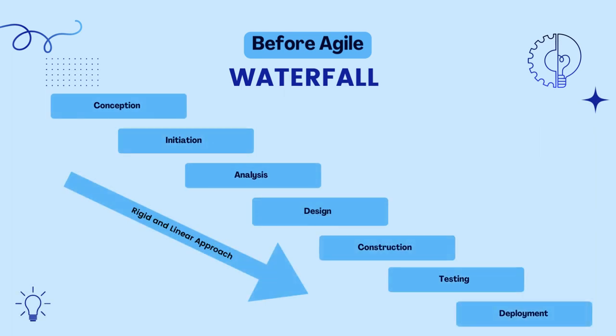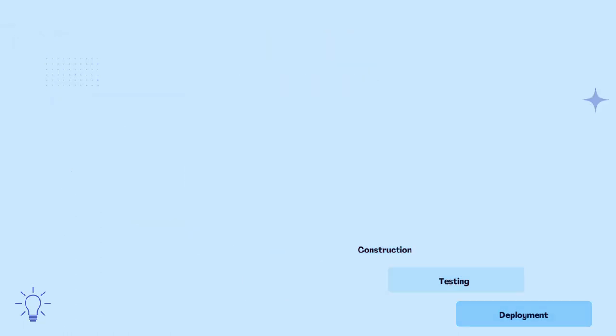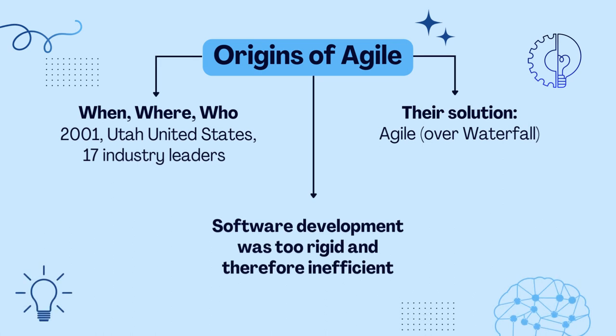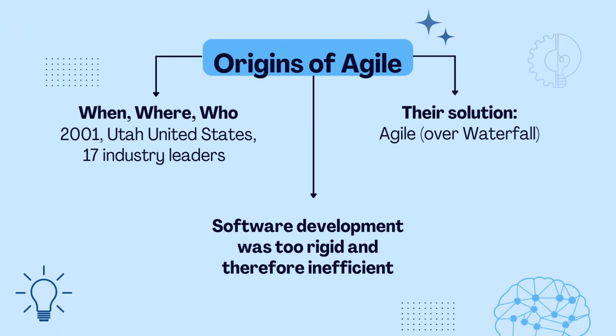Before Agile, the most common approach to development was a waterfall methodology. This approach was strict, rigid, and linear — a set way of doing things. Industry experts, frustrated with existing approaches, decided change must come. From this meeting, Agile was born.